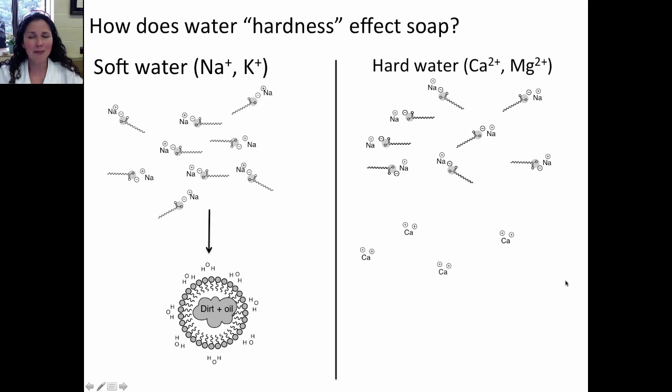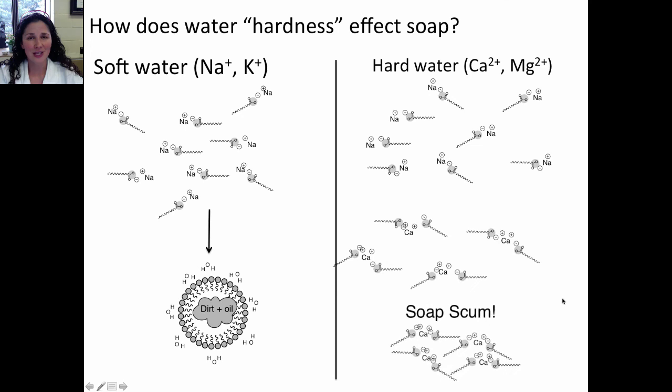Each calcium, for example, will be attracted to two of the fatty acids. And now you have a cluster of ions that have long non-polar parts on either side. This causes them to aggregate and form soap scum. Soap, in general, is more sudsy in soft water than it is in hard water. And in hard water, soap forms soap scum.